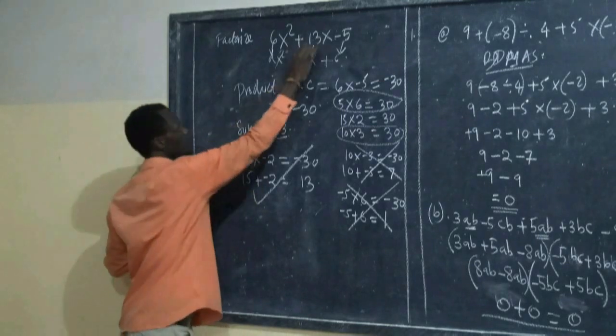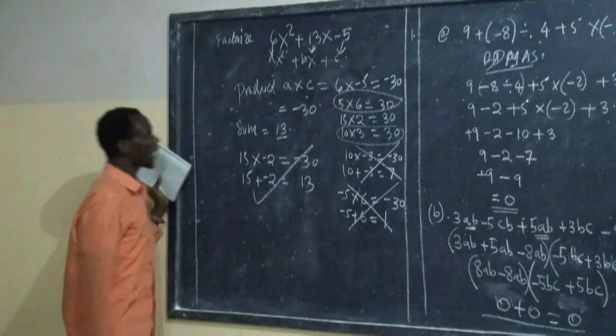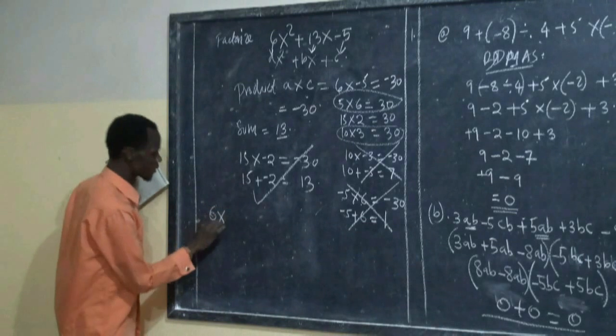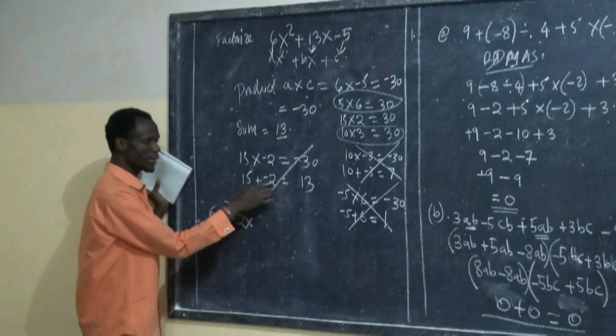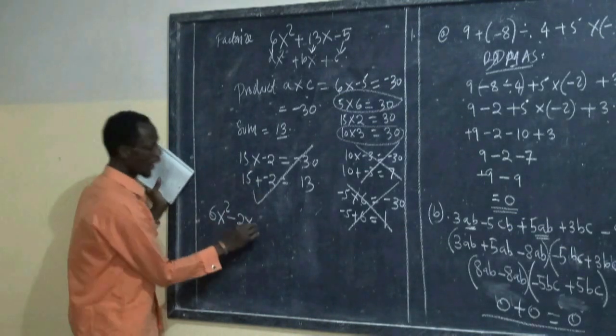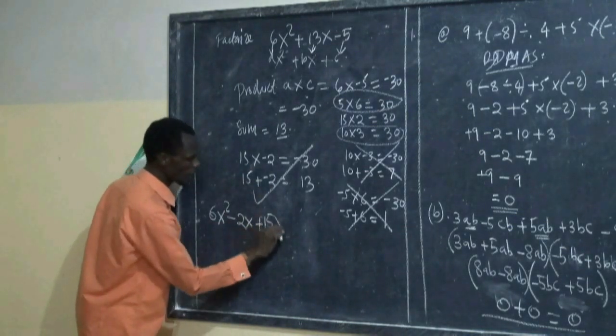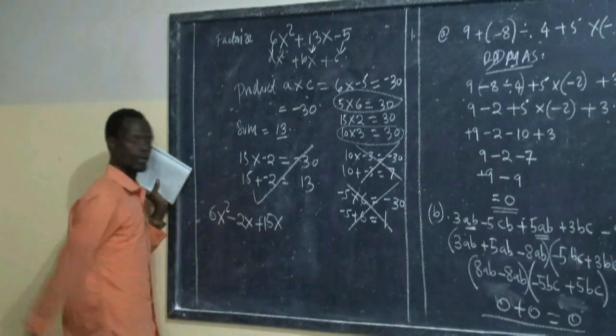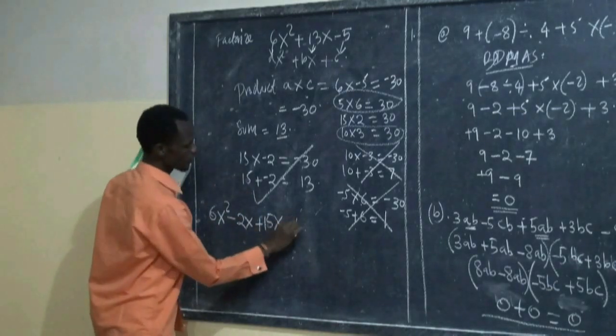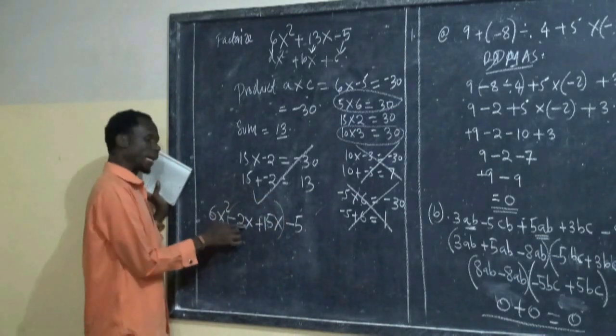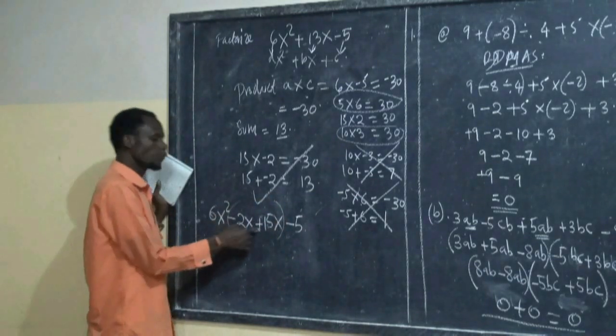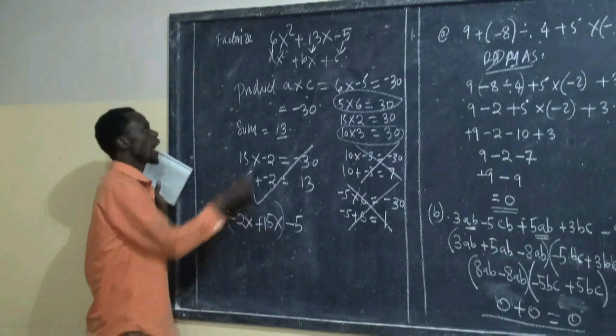Therefore we have 15 and negative 2. We count to here. Then we take 6x² plus negative 2x here, then positive 15x here, then negative 5. Now negative 2x plus 15x is 13x.